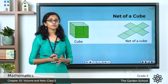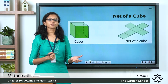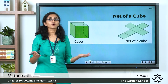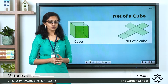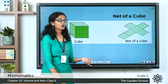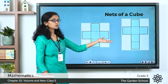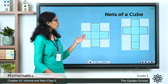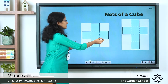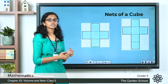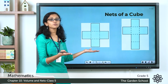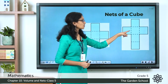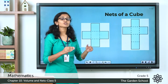Remember, for the same solid shape it is possible to have several different nets depending upon how you open it out flat. Let's see a couple more nets of a cube. You can see two more nets of a cube here. If you fold this net along the dotted lines you will get an open cube, whereas if you fold this net along the dotted lines you will get a closed cube. Can you visualize that?